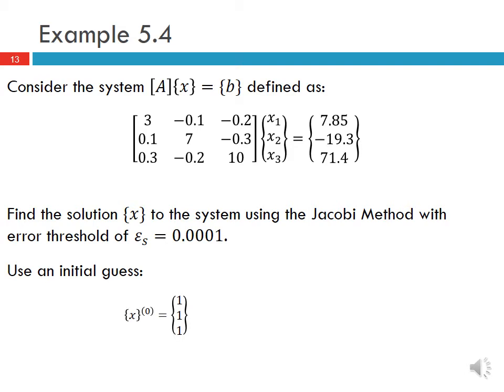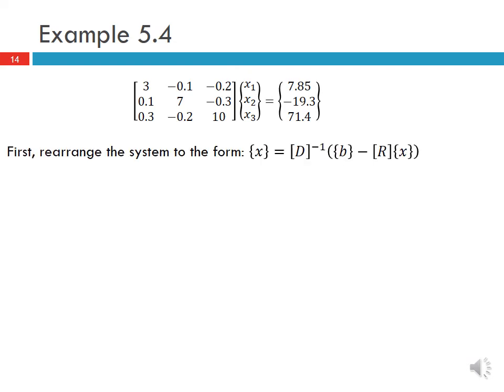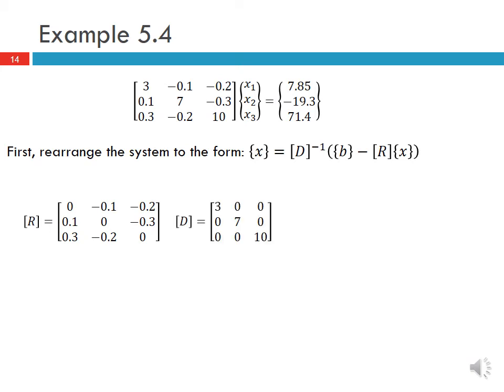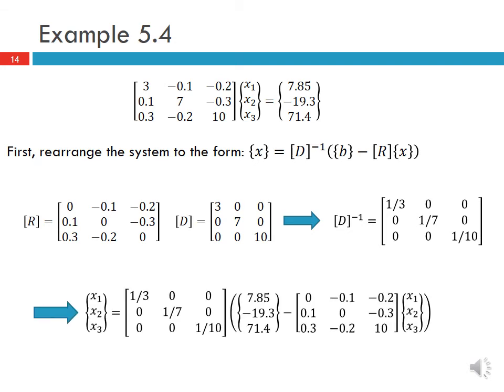Consider the system Ax equals b defined as shown here. We want to find the solution x using the Jacobi method with an error threshold εₛ equal to 0.0001 and an initial guess x₀ of [1, 1, 1]. We first rearrange the system to the form x equals D-inverse times (b minus Rx). R is formed by taking A and putting zeros along the diagonal; D contains only the diagonal components of A; and D-inverse has diagonal entries 1/3, 1/7, and 1/10.